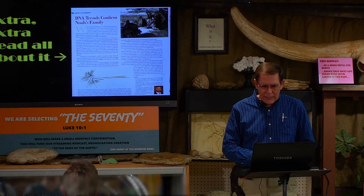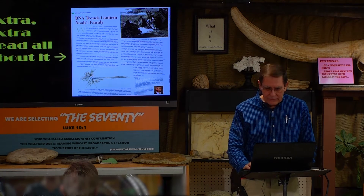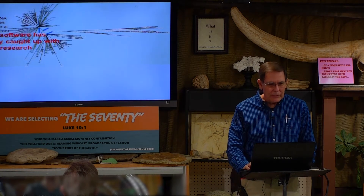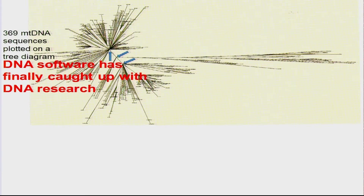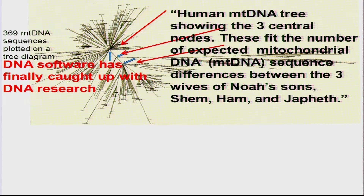You're seeing a little diagram there on the left — let's get it bigger. It's a series of lines. I'll highlight the red ones so you can see it better. Each line represents a different person. There are 369 lines because there are 369 people in this sample.